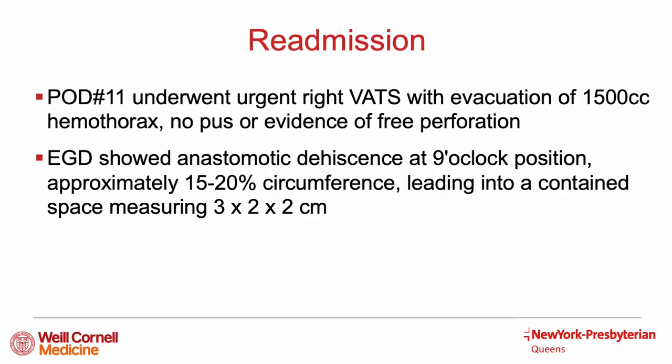The patient was admitted to the operating room, where he underwent a right VATS with evacuation of around 1,500 cc's of retained hemothorax. Of note, there was no purulence or evidence of free perforation from the anastomosis. He then underwent an EGD, showing an anastomotic dehiscence at the 9 o'clock position, which was approximately 15-20% of the total circumference. This led to a contained cavity, approximately 3x2x2 cm in size.